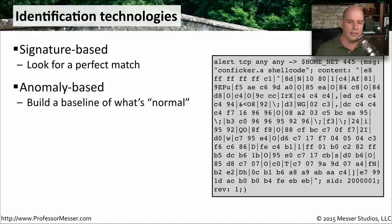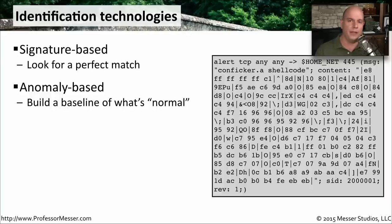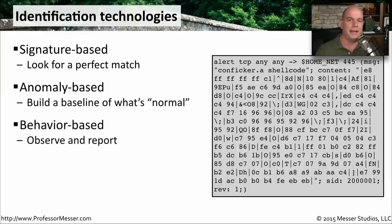Another identification technology is anomaly-based detection. These devices watch what's normal over time, and if anything changes, they identify that change and allow or block based on associated rules. Another common approach is behavior-based detection — if somebody is accessing a particular network share, that specific behavior can be identified as suspicious and the communication allowed or disallowed accordingly.